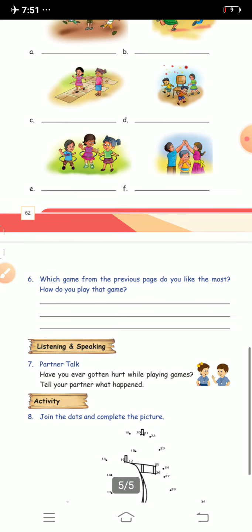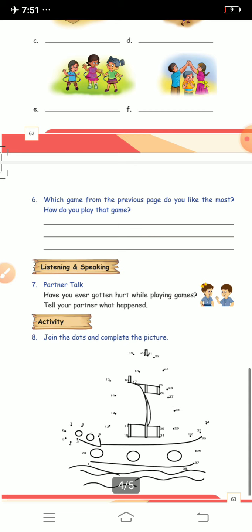Question seven is a partner talk. It will be a parent talk, or you can talk with your brother or sister: have you ever gotten hurt while playing games? You have to recall that and talk about it with your parent, brother, or sister.